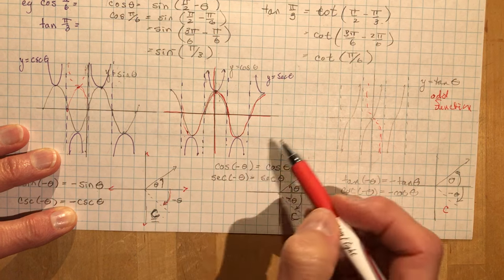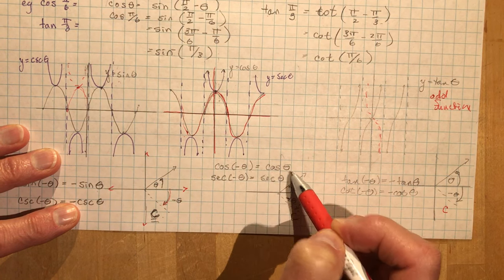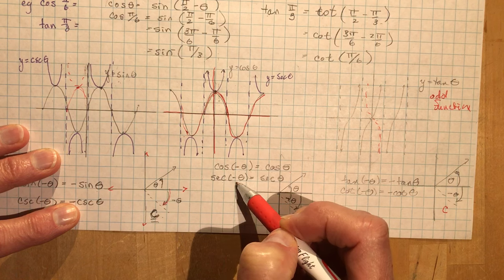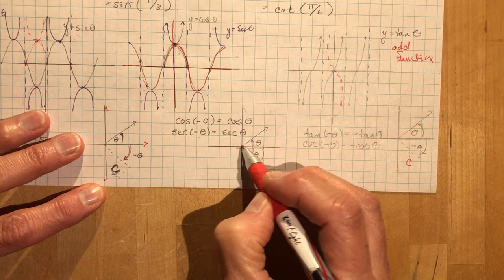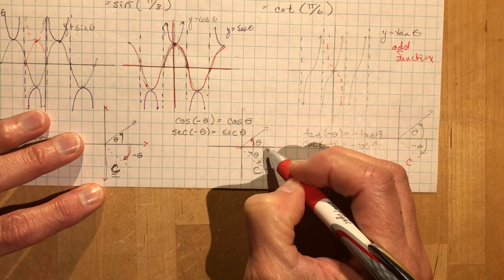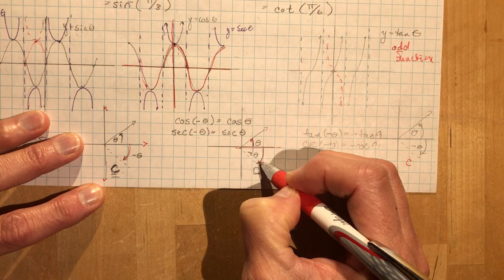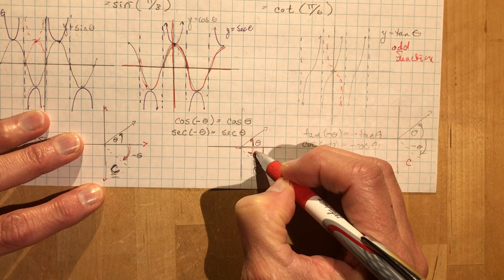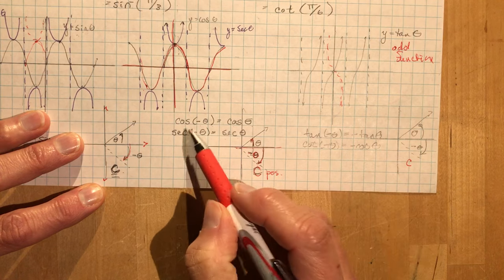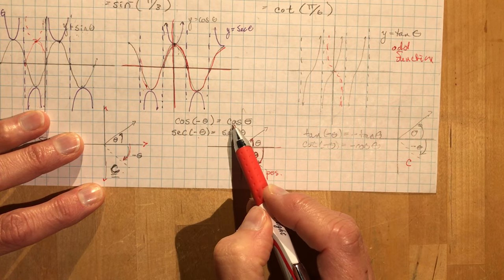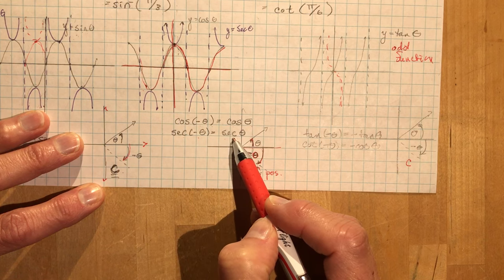So the cos of negative theta is equal to the cos of theta, and the secant of negative theta is the secant of theta. And again you can prove that here on the coordinate plane. If I go theta this way, and if I went a negative angle, so negative theta, when I'm in this quadrant, cos is positive. So the cos of negative theta is equal to the cos of theta, and secant negative theta is equal to secant theta.